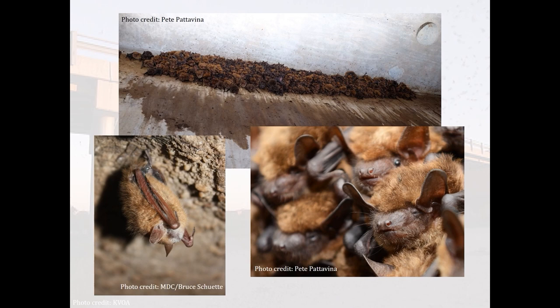The top photo is a southeastern myotis maternity colony on the underside of a concrete bridge. The photos below show big brown bats on the left and a lactating female and pup of unknown species on the right.